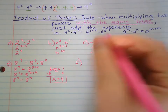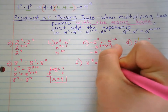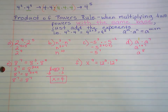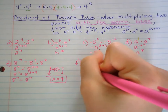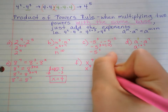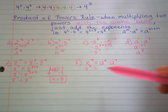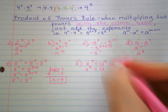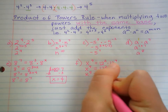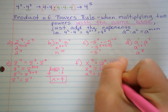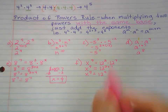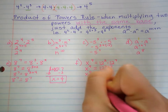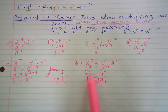Example F: x to the 9th equals 12 to the 2nd times 12 to the 7th. The left side — x to the 9th — we can't do anything with that; it's just x times itself 9 times. But the right side, we can use the product of powers rule. Same base being multiplied — add the exponents: 12 to the 2nd plus 7th. So that's x to the 9th equals 12 to the 9th. What must x equal? Well, 12. If x equals 12, then that's 12 to the 9th equals 12 to the 9th.